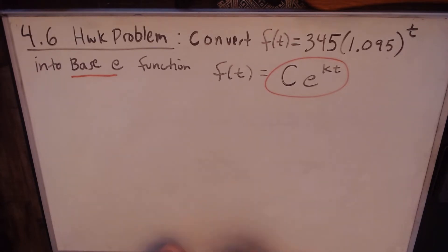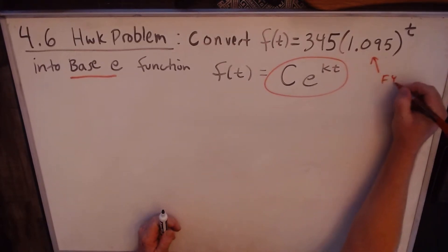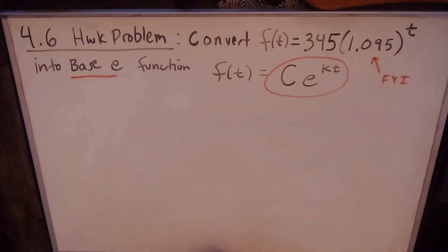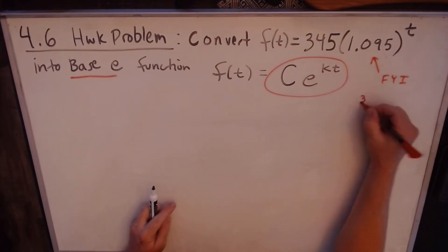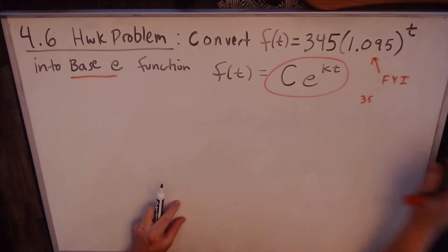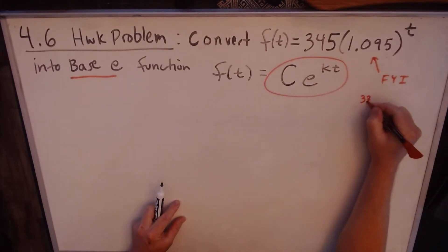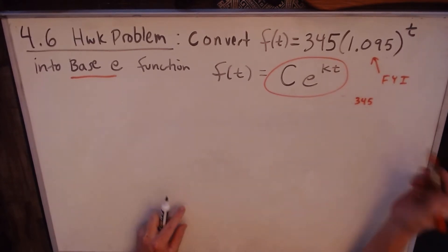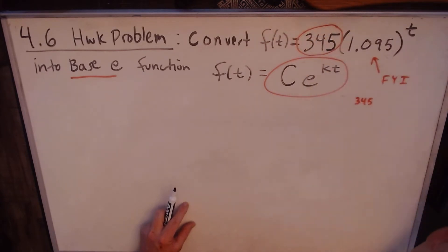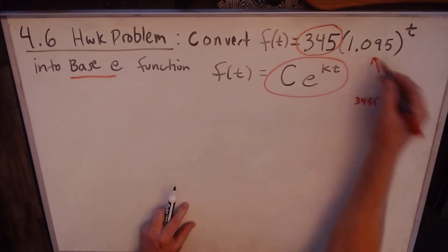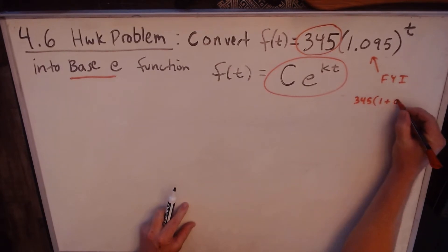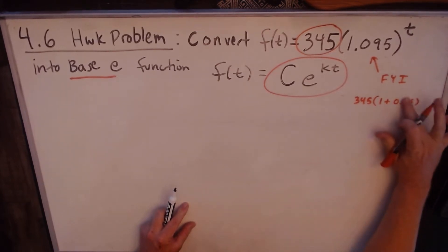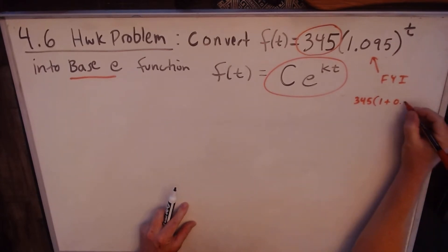So just FYI, this is an equation that we've seen before. This would be a principle of $345, that's the 345, and then 1 + 0.095, that's what this decimal represents to the t.